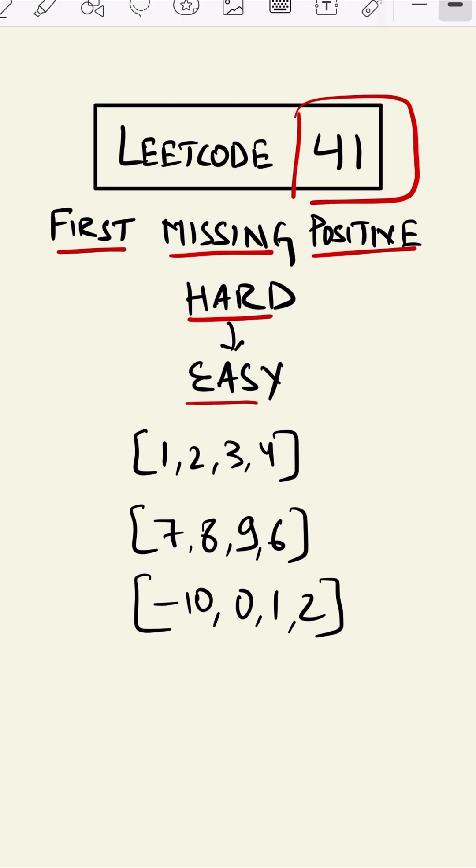In this question we are given a list like this, and we have to find the first missing positive integer. For example, if we take a look at this, the first missing positive by looking at this we can say is 5.